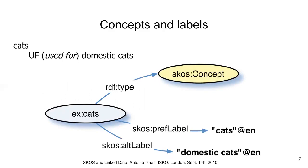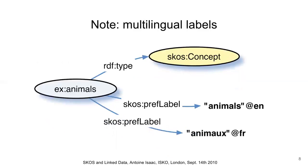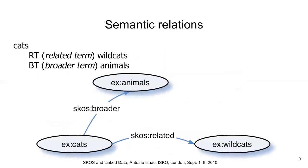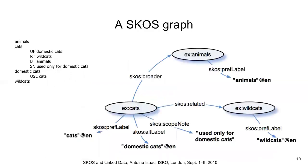In SKOS terms, cats is a resource which is of type SKOS concept. SKOS concepts have labels including preferred labels and alternative labels. In this example, the preferred label is cats and the alternative label is domestic cats. This use of pref label and alt label is equivalent to the earlier use-and-used-for relationship. SKOS can also indicate the language of a label, in this case English. A SKOS concept may have many preferred labels, but at most one in a particular language. Here we see French and English language preferred labels for the concept animals, a feature which supports multilingual search.